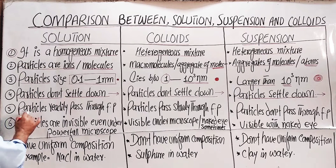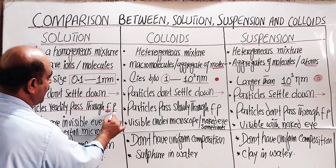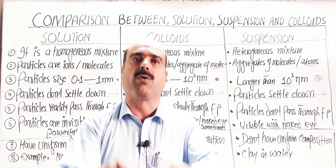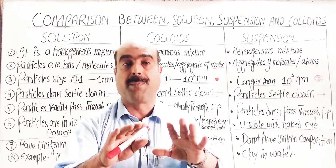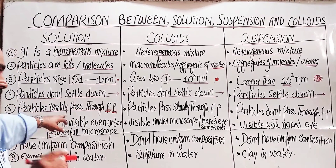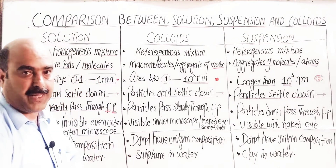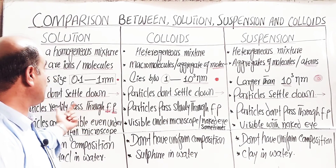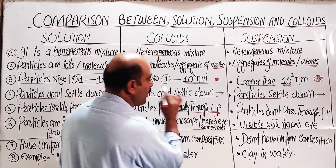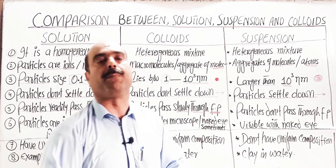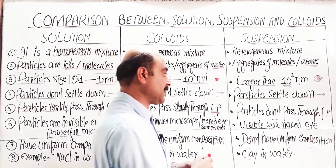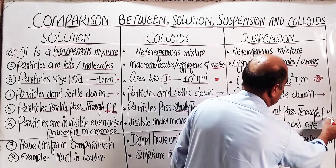Fifth difference: in solution, the particles readily pass through filter paper because the solute particle size is so small that they can pass through the pores of the filter paper — directly without any resistance. In colloids, the particles can pass through filter paper. In suspension, the particles do not pass through filter paper.